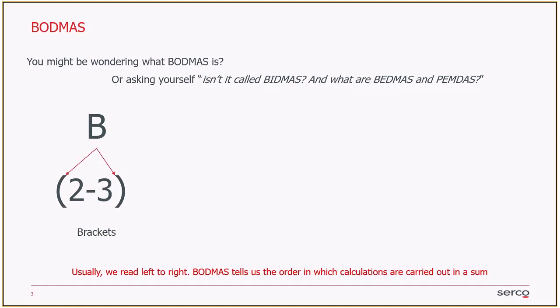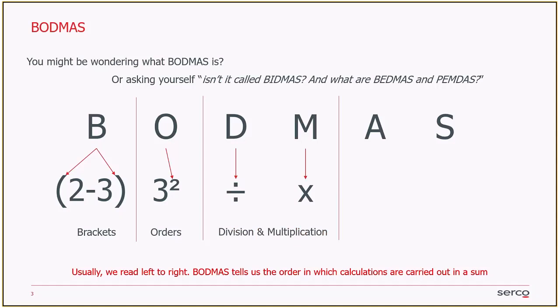So B stands for brackets. Whenever you see brackets within a calculation, you should always do the brackets first. The O stands for orders - that would normally be squaring a number or cubing a number or square root of a number. Then DM and AS - divide, multiply, add, subtract. Spot on. Once we've done our brackets, then we do our orders. Then if there's any division and multiplication, we do that next. Then if there's any addition and subtraction, we do that finally.